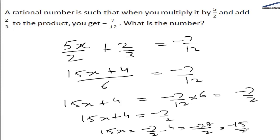That is minus 15 by 2. So x will be equal to minus 1 by 2. So the rational number is minus 1 by 2.